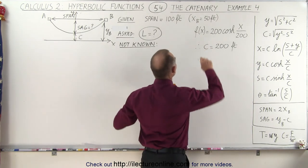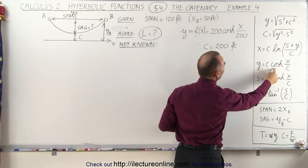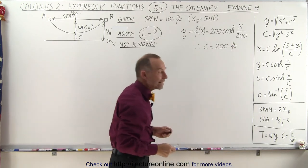f of x, of course, is equal to y, and we have y is equal to c times the hyperbolic cosine of x over c, so in essence, they've also given us c indirectly.